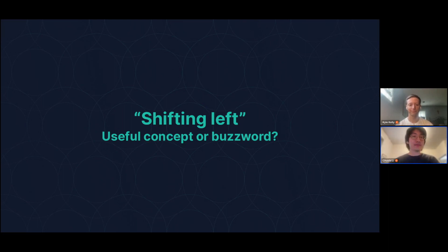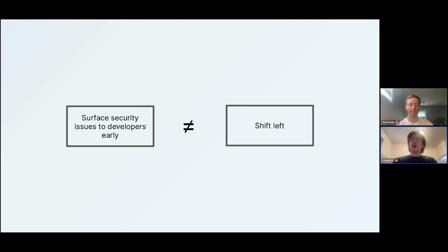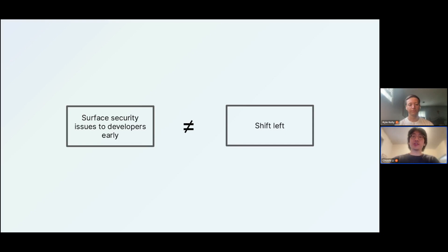Shifting left is not just bringing issues to developers early. This is definitely one part of the equation, but it's the easy part and also the very obvious part. Every AppSec team understands there are five of us and 500 developers, so developers are obviously going to need to be involved somehow. You're free to interpret shift left to only mean this — bringing issues to developers early — and implicitly that's the interpretation most other vendors take. They'll scan your code, have a Jira integration built out, and create 100 tickets for high severity issues.